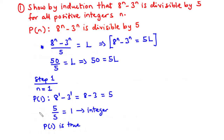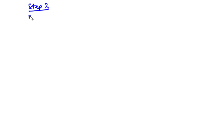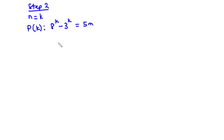Now let's move on to step 2, where we assume that the statement is true for n equals k, where k is any positive integer. So for P(k), substituting k in place of n, we have 8^k minus 3^k equals 5 times some integer m. Let's make 8^k the subject: 8^k equals 5m plus 3^k. We call this equation 1.